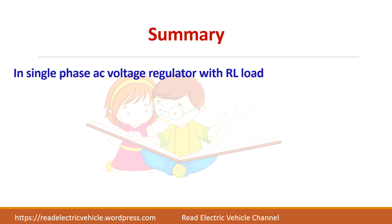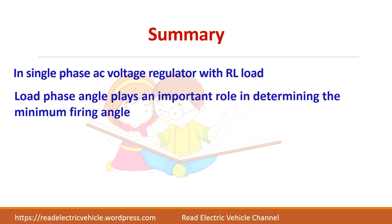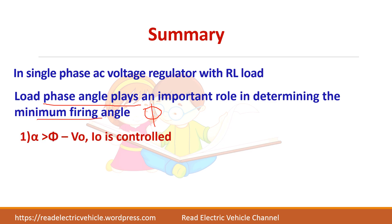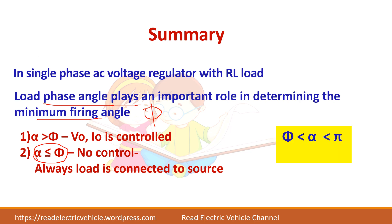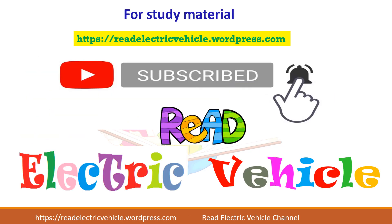In summary, for a single phase AC voltage regulator with RL load, the load phase angle phi plays an important role. For alpha greater than phi, output voltage and current can be controlled. For alpha less than or equal to phi, there is no control over the output. This is different from R load, where alpha can be varied from 0 to 180 degrees freely. The load angle phi determines the effective range of the firing angle alpha.